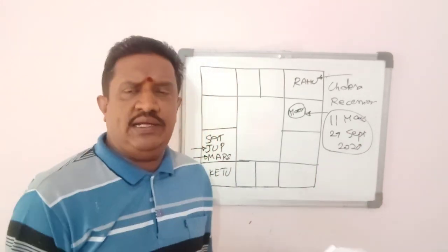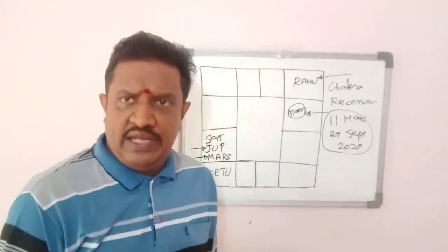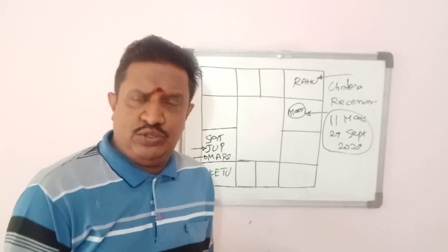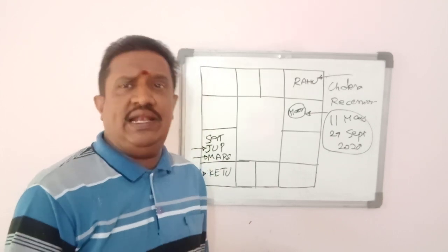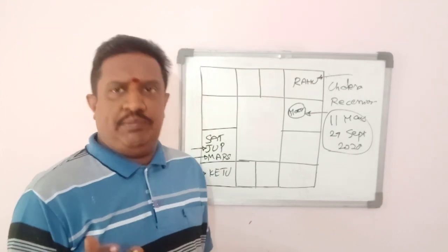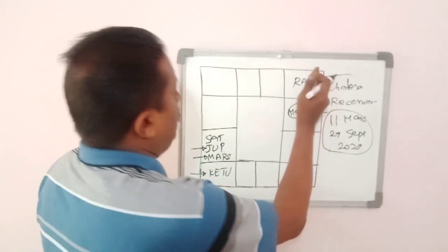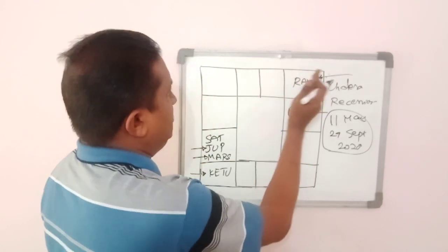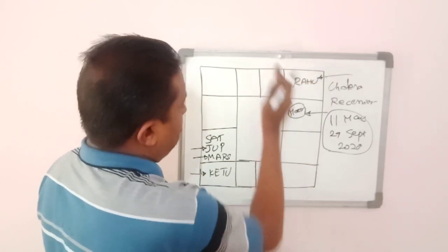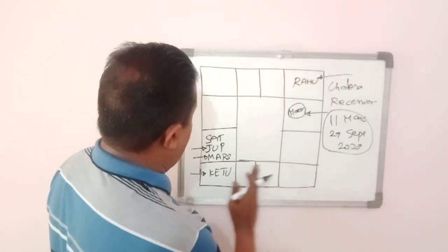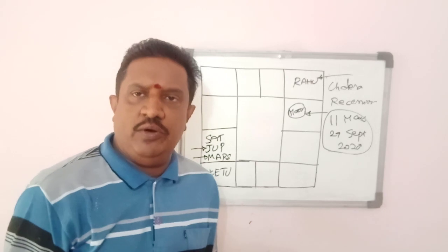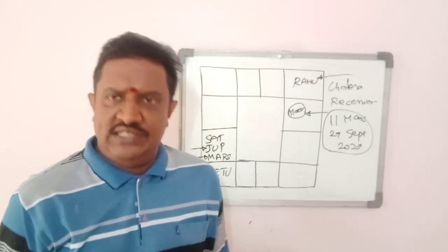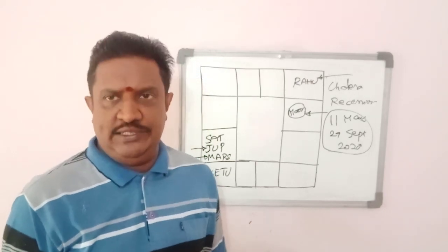We can expect this fear and the crisis of coronavirus health issues to continue till the end of September. Also, Rahu and Ketu need to shift their axis — Rahu needs to enter Taurus and Ketu needs to enter Scorpio — before we see some relief from this panic situation.